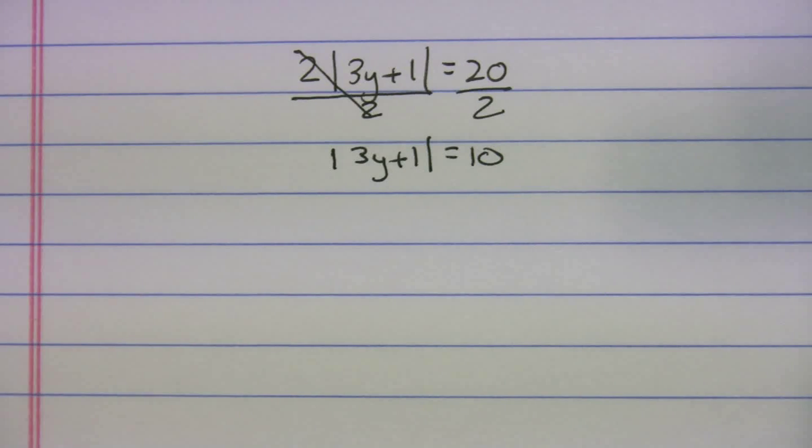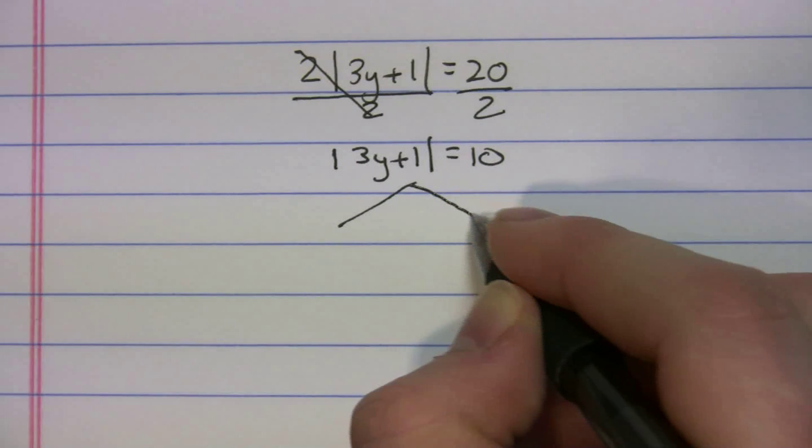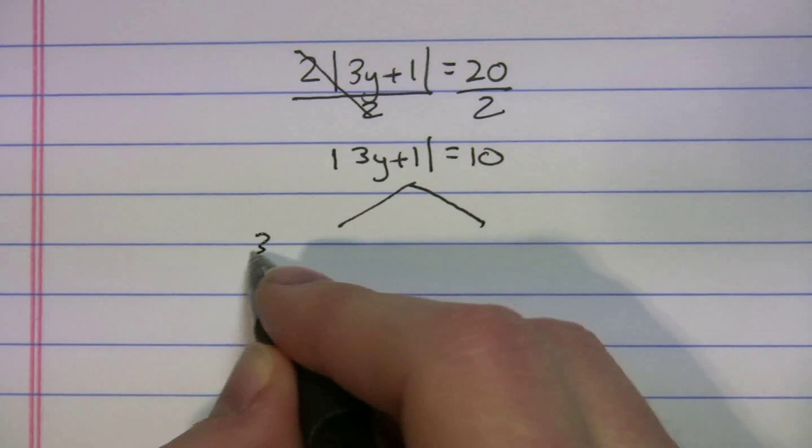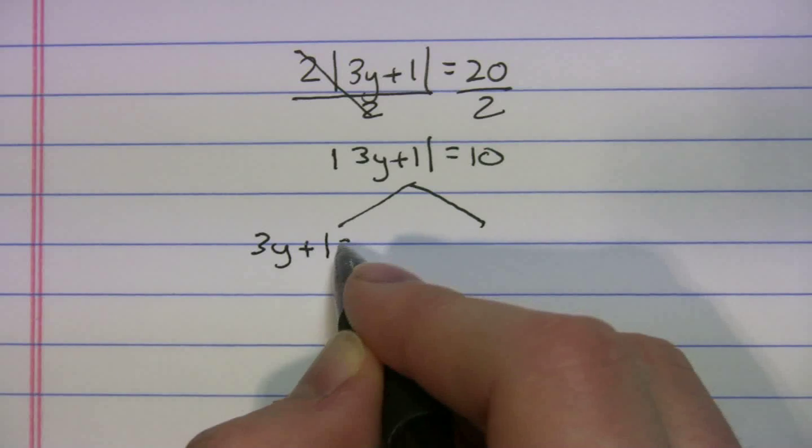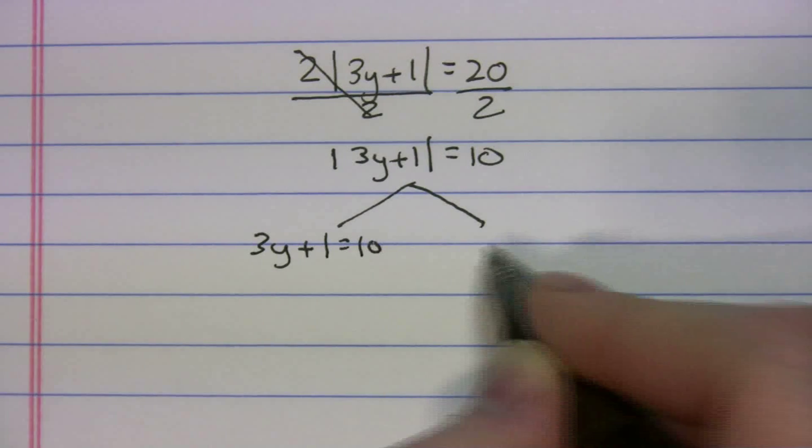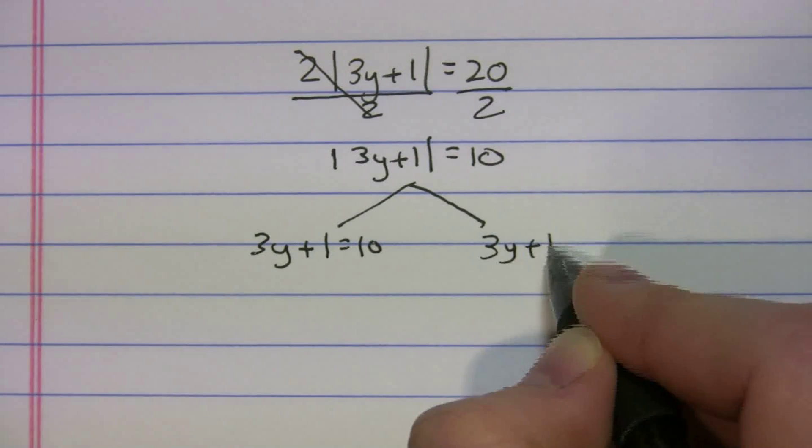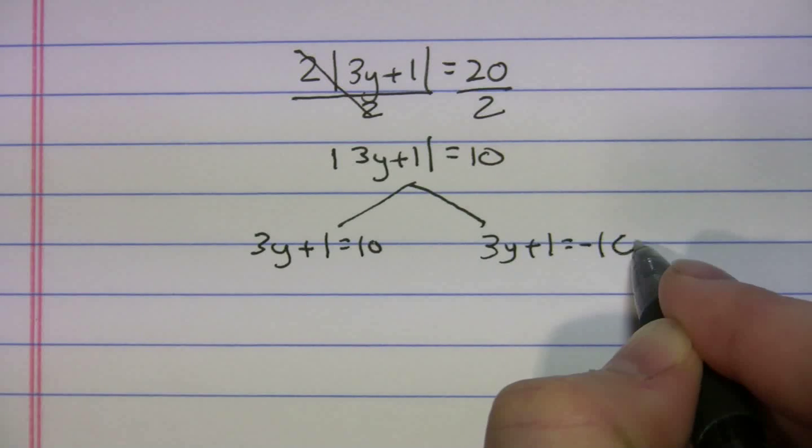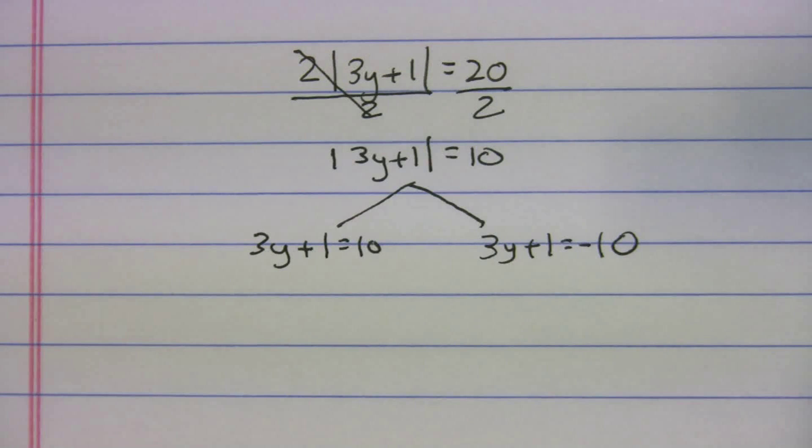And we're just going to set it up the same way I just did: two separate sides. We rewrite the equation as it is. And then we do it and set it equal to the negative number. Right? And now let's solve.